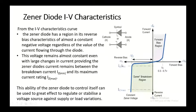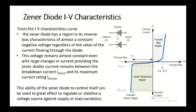From the breakdown current IZ min to the maximum current rating IZ max, there is a large increase in current but the voltage remains constant. In the Zener breakdown you can see it has a sharp curve which indicates constant voltage. This ability of the Zener diode to give a constant voltage helps it to stabilize or regulate the voltage source against supply or load variation.